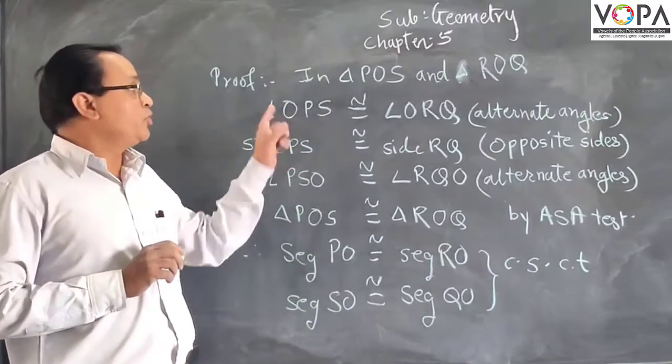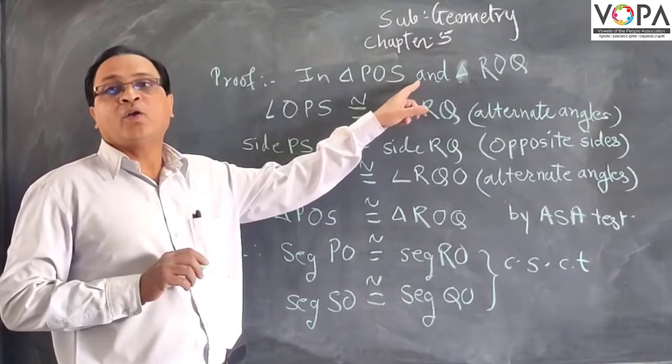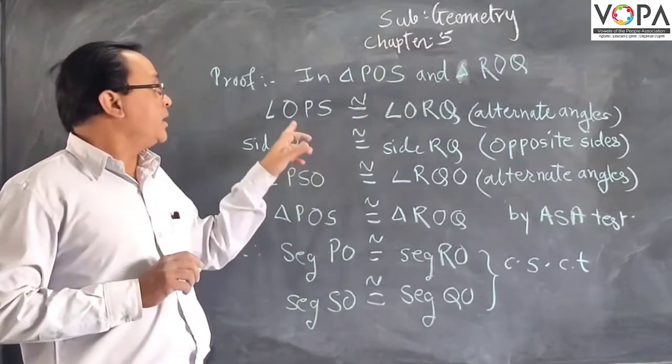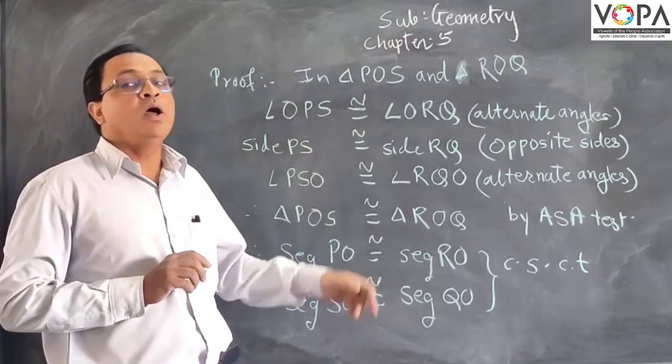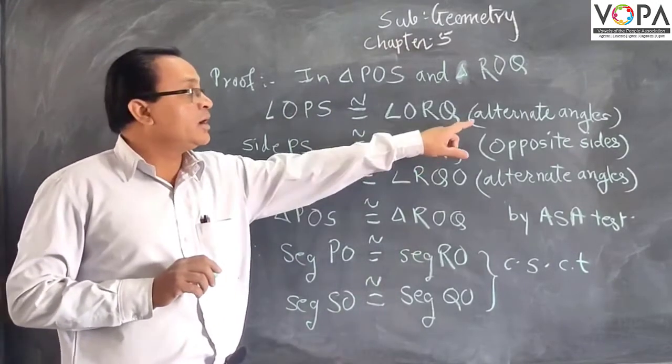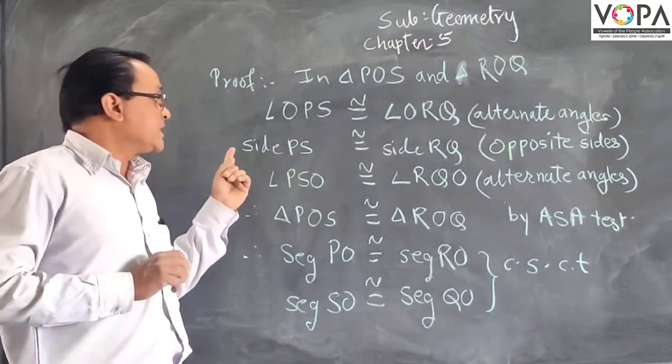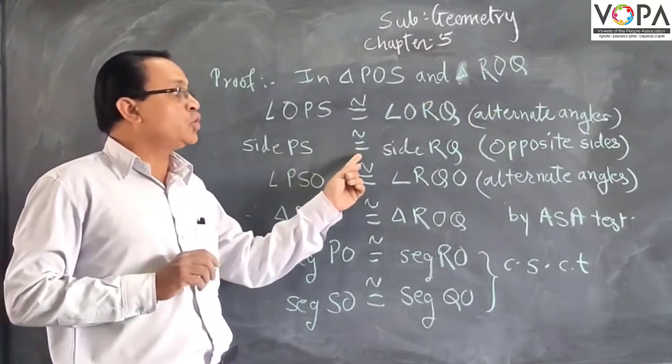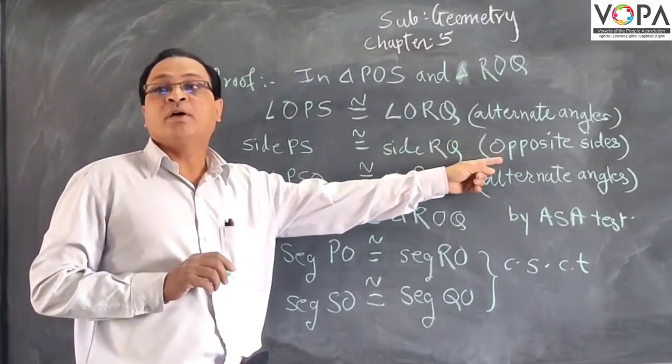Now, in proof, in triangle POS and triangle ROQ, angle OPS is equivalent to angle ORQ. They are the alternate angles of parallelogram. Secondly, side PS is equivalent to side RQ. These are the opposite sides of the parallelogram.